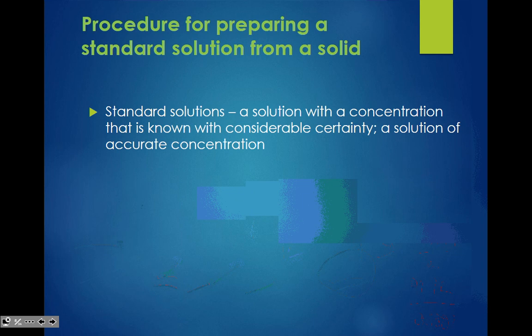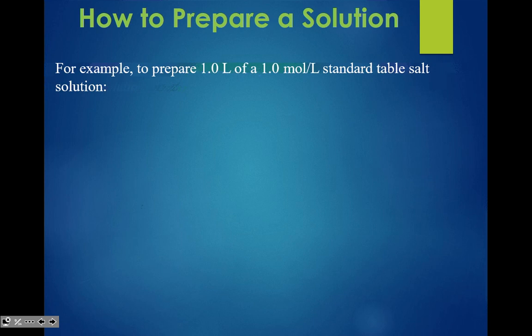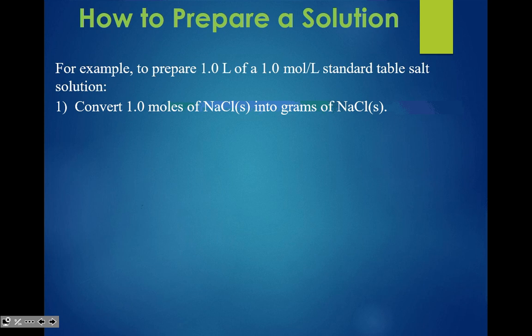Let's look at the procedure for preparing a standard solution. A standard solution is a solution where you know the precise concentration. To prepare 1.0 liters of 1.0 moles per liter standard table salt solution, step one is to convert the required moles into grams. The molar mass of sodium chloride is 58.44 grams per mole. Start with 1.0 liters, multiply by 1.0 mole per liter, then by 58.44 grams per mole — liters and moles cancel out, giving you the grams needed.